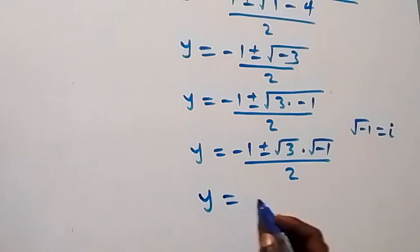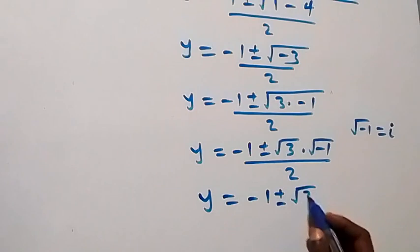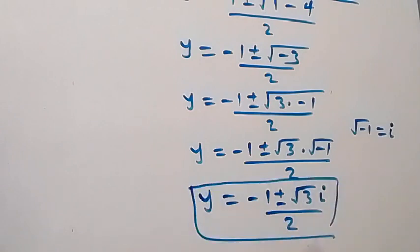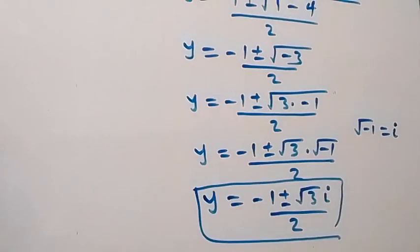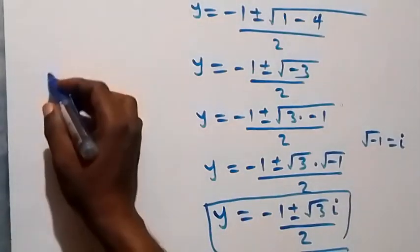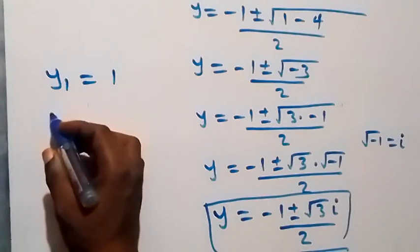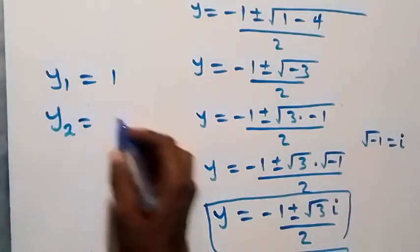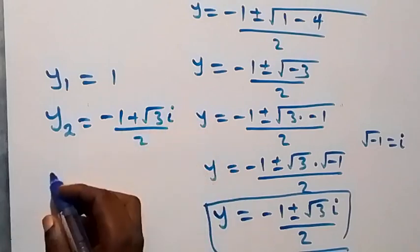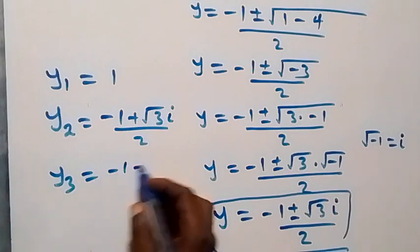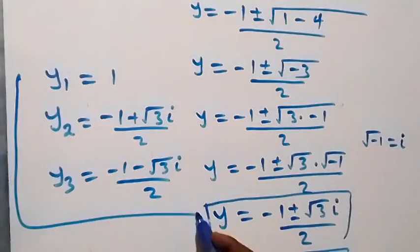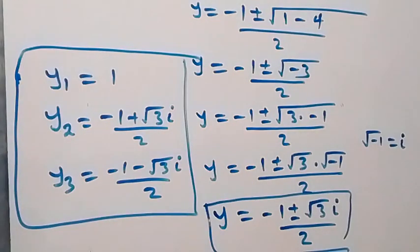So here, we have two complex solutions. So all together, we have three solutions. The first one: y equals to 1. Then y equals to negative 1 plus or minus root 3 times i, over 2. So here we have these three solutions — one real solution and two complex solutions.